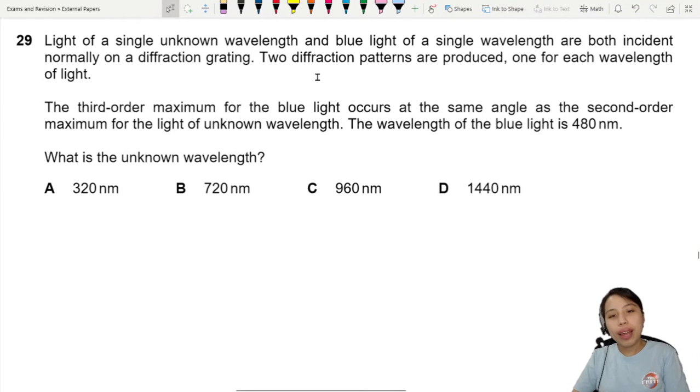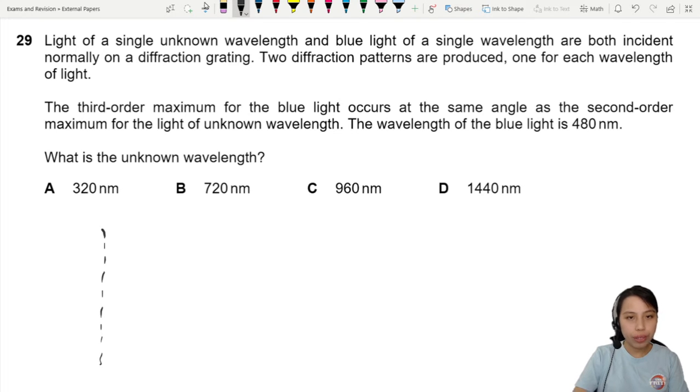Light of a single unknown wavelength and blue light of a single wavelength are both incident normally on a diffraction grating. If I use this dotted line to represent my diffraction grating, we got blue light coming in and we got some who knows what color also coming in. Two diffraction patterns are produced, one for each wavelength of light.